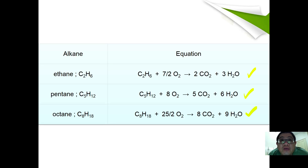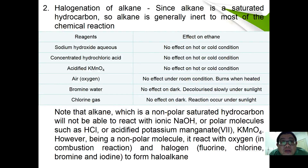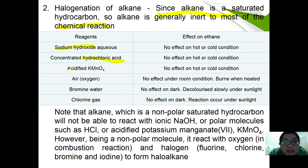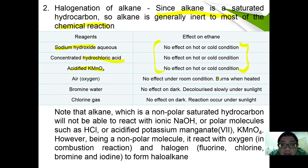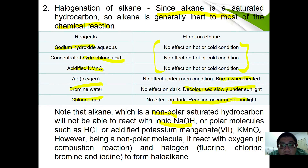Now we continue with the halogenation of alkanes. First, let's understand why alkanes are so inert. Since alkane is a saturated hydrocarbon, it is generally inert to most chemical reactions — it cannot react with sodium hydroxide, hydrochloric acid, or acidified potassium manganate, with no effect regardless of hot or cold conditions. However, in air under heating it burns to form CO2 and water. In bromine water there is no effect in the dark, but it decolorizes slowly under sunlight. With chlorine gas, a reaction occurs rapidly under sunlight.